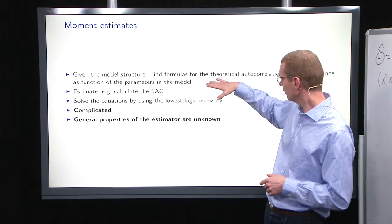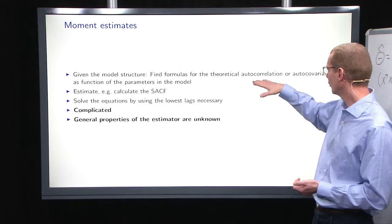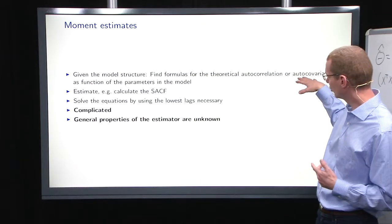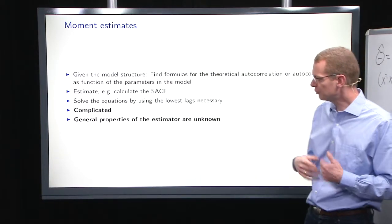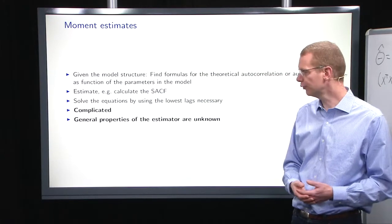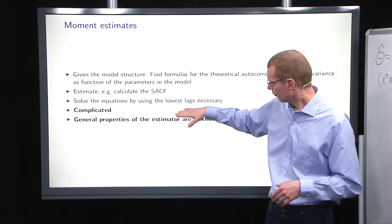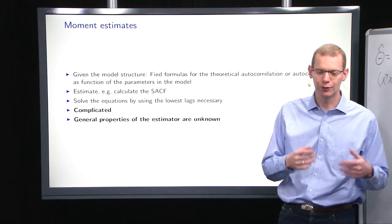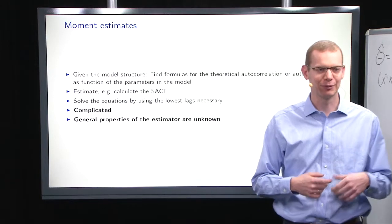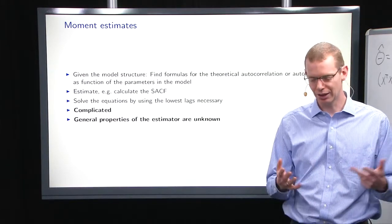We should find theoretical expressions in the given structure for the autocorrelation or autocovariance as functions of the parameters. Then we calculate the autocorrelation function and use that to estimate, with the necessary number of lags. So you have three equations, you need three elements, and so forth.